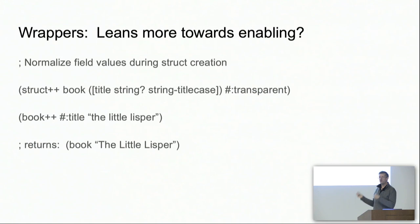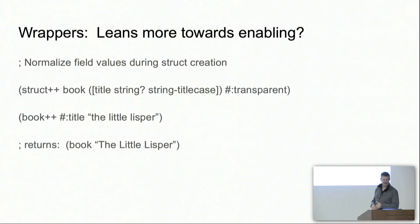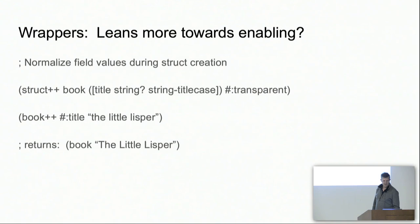Field wrappers are construction-time wrappers — there are also access wrappers but those are being pushed off. Here's a book struct with one field named title that must be a string, and it has a wrapper of string-title-case around it. You can see here I passed it a lowercase value and it normalized it to title case. You could easily have the wrapper be a function so that the model '1500' gets turned into the string '1500' if you accidentally pass it a number.